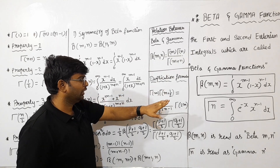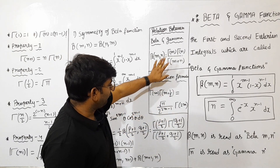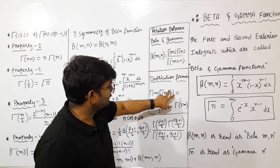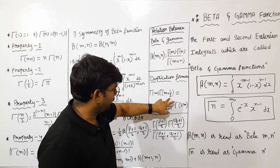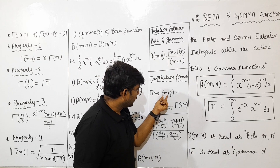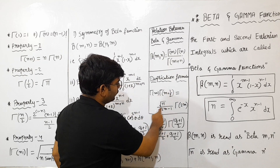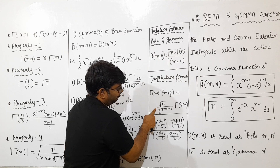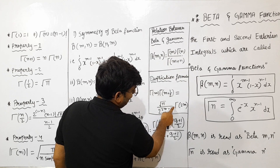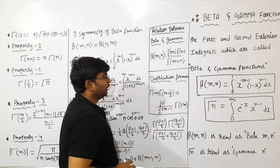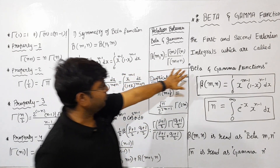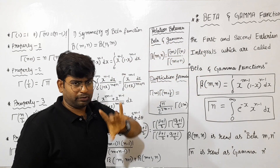There is a duplication formula. The Gamma function duplication formula is: Gamma(m) into Gamma(m plus 1/2) is equal to root over pi divided by 2 to the power of 2m minus 1, into Gamma(2m). That is the duplication formula. We will manage these formulas. Next is the Beta-Gamma formula.